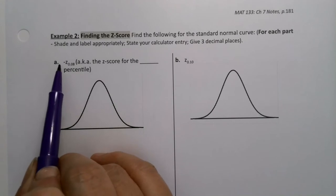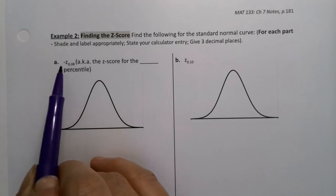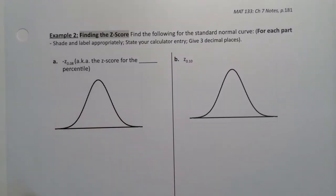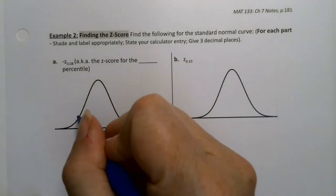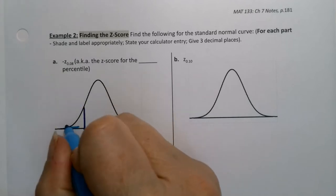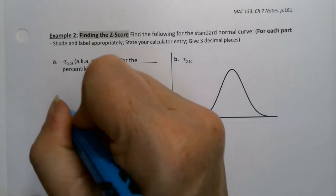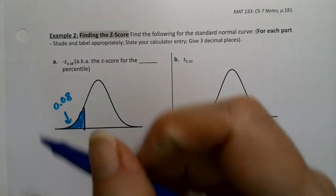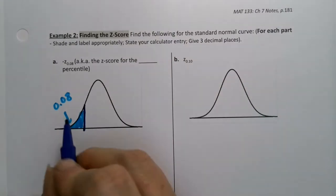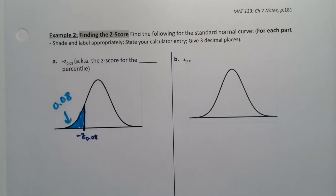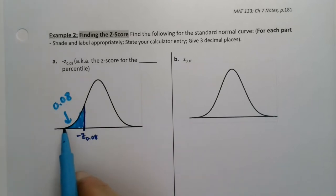We are asked to find negative z.08. Remember, that's a definition we learned a couple pages ago — it means that the area to the left is 0.08. I want to have 8% in this tail, so this area right here would be 0.08. This line hits the z-axis at negative z.08. In other words, we're finding the z-score for the 8th percentile, because 8% is below that value.